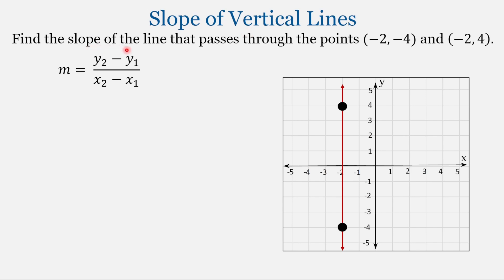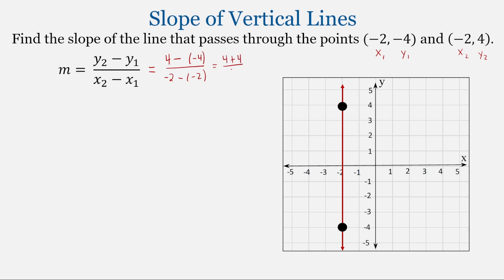Now let's look at vertical lines. We'll find the slope of the line that passes through the points (-2, -4) and (-2, 4). Setting up the slope formula: y₂ minus y₁ is 4 minus negative 4, all over x₂ minus x₁, which is negative 2 minus negative 2. That's 4 plus 4 over negative 2 plus 2, giving us 8 over 0. Division by zero is not allowed, so the value of the slope is undefined.